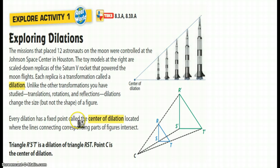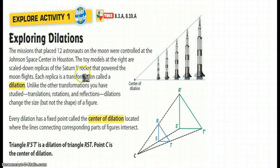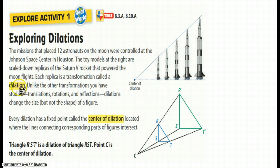Every dilation has a fixed point, and that is called a center of dilation, and it's located where the lines connecting the corresponding parts of figures intersect. Dilations are either enlargements or reductions. When a dilation is enlarged, the scale factor is greater than one, and when a dilation is a reduction, the scale factor is less than one.